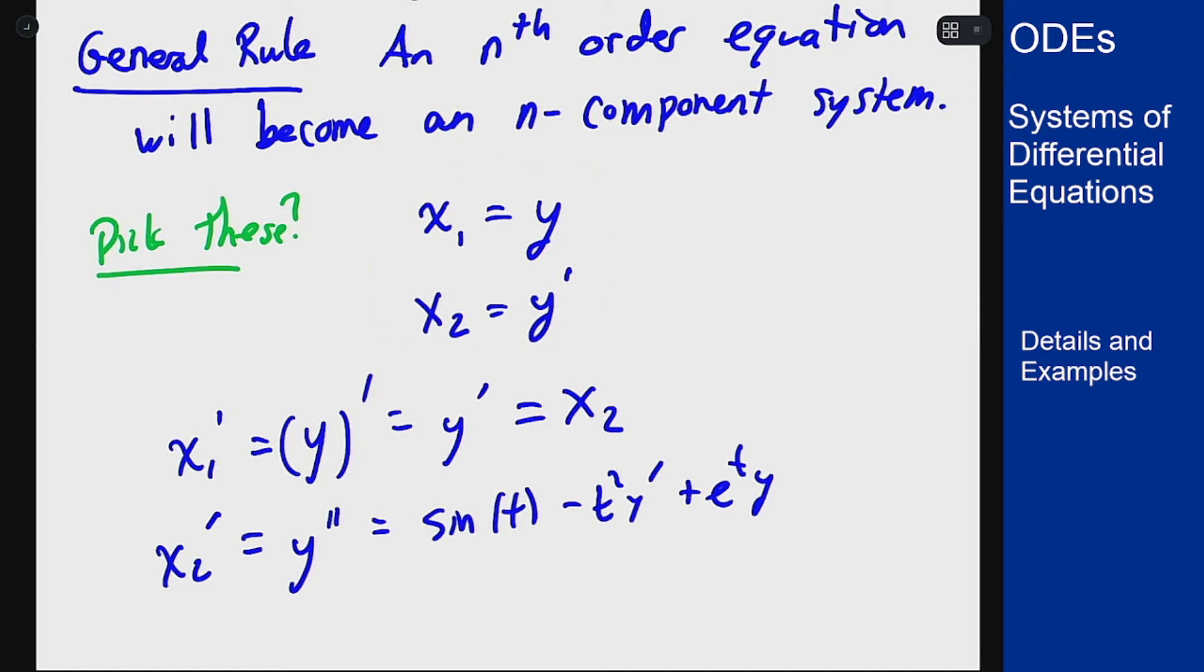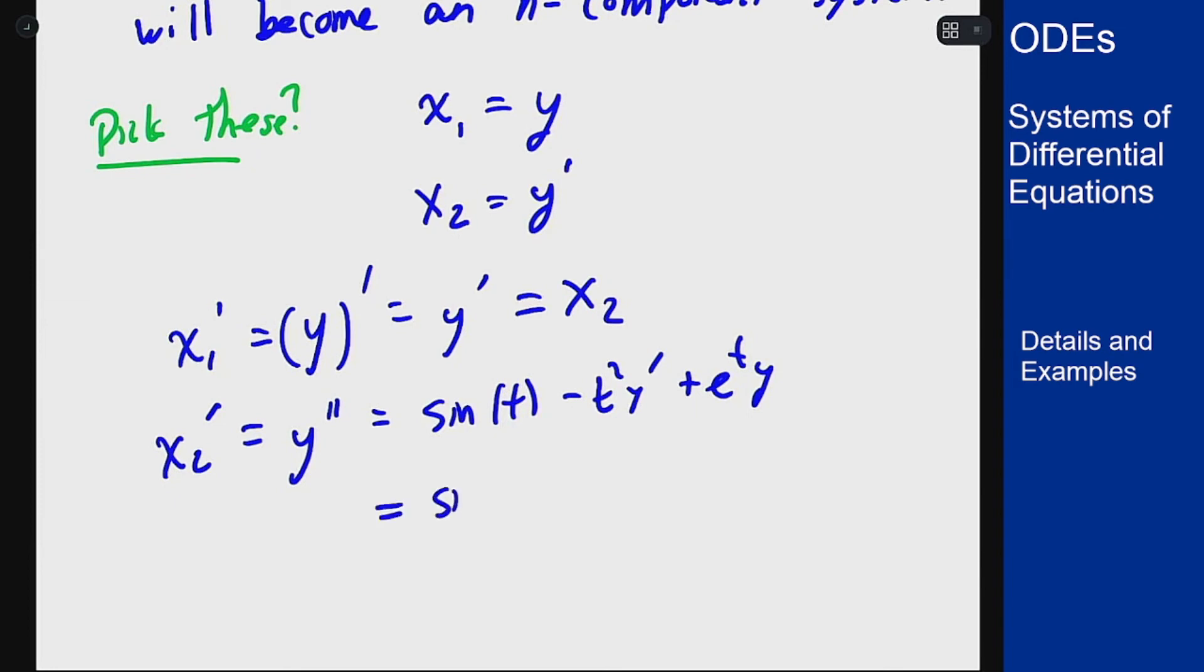So y prime is just x2, and y is x1, meaning this becomes sine of t minus t squared x2 plus e to the t x1.